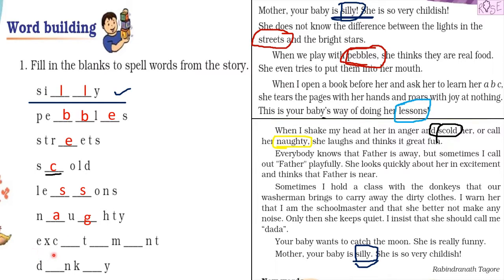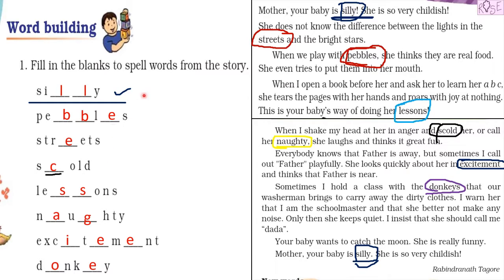Next is 'e', 'x', 'c', blank, 't', blank, 'm', blank, 'n', 't' — which word is this? Yes, you found it in the story — it is 'excitement', E-X-C-I-T-E-M-E-N-T. The last word is 'd', blank, 'n', 'k', blank, 'e' — this is the name of an animal. It is 'donkey', D-O-N-K-E-Y. And here it is in the story — donkey!